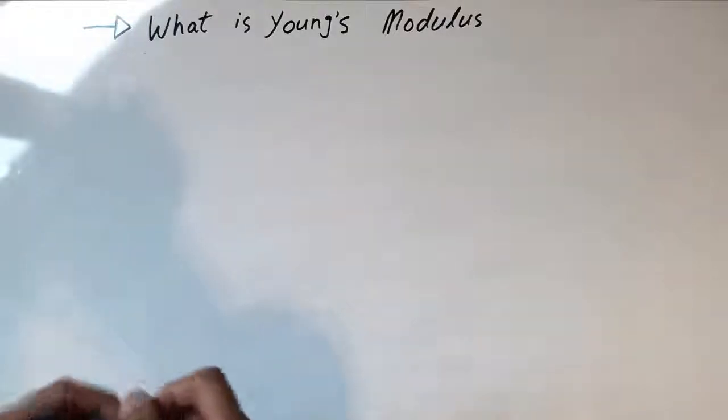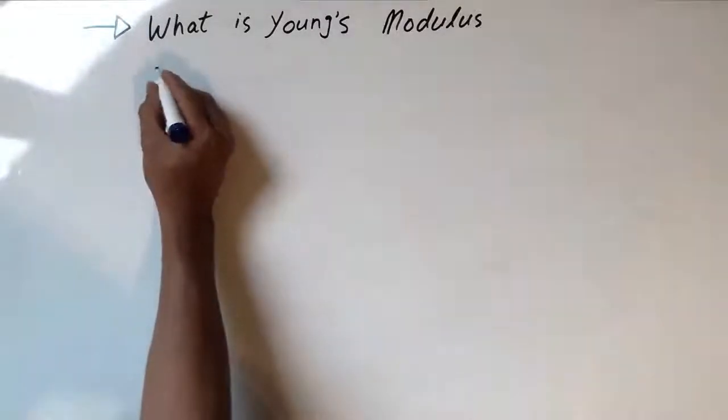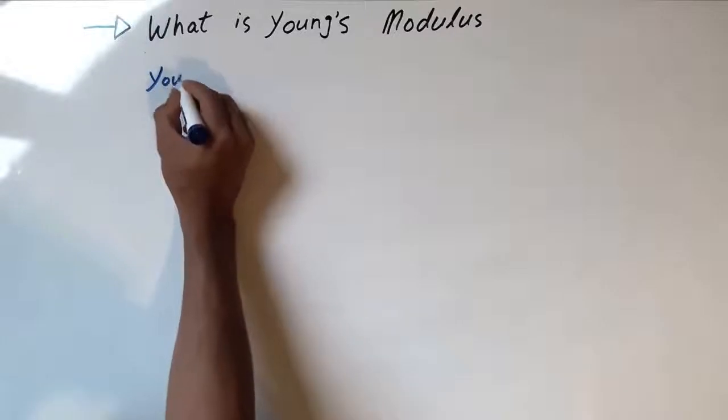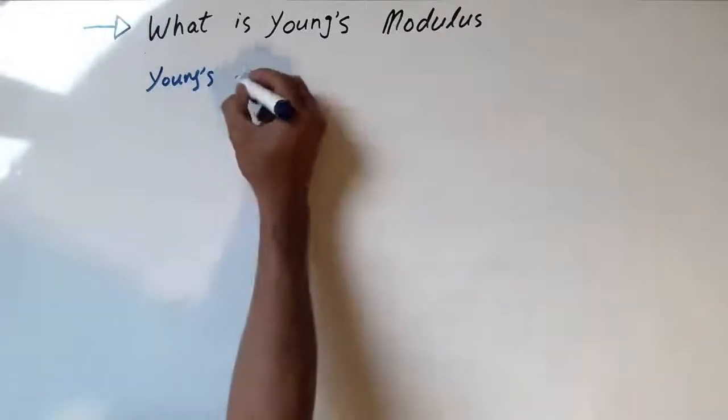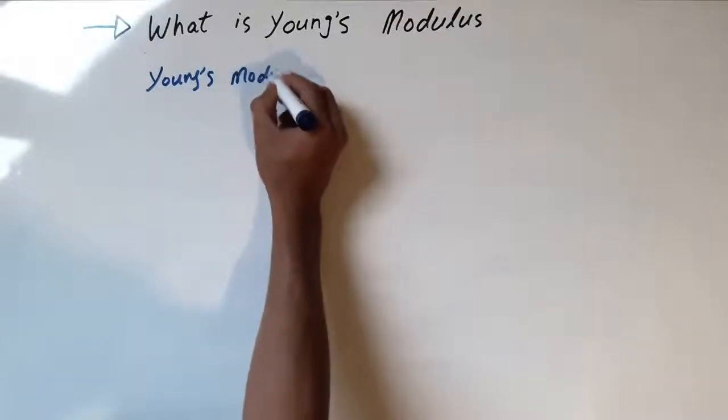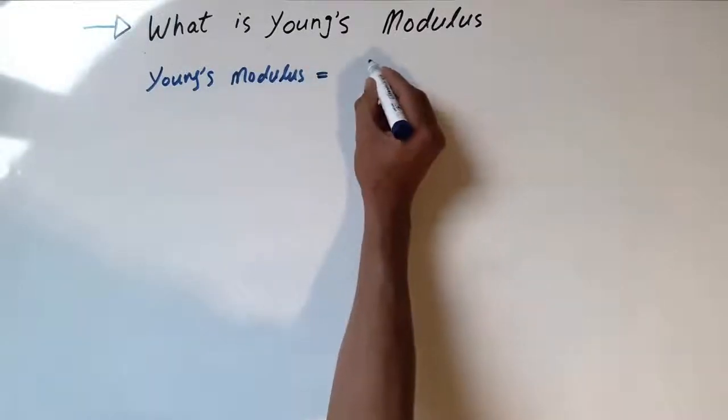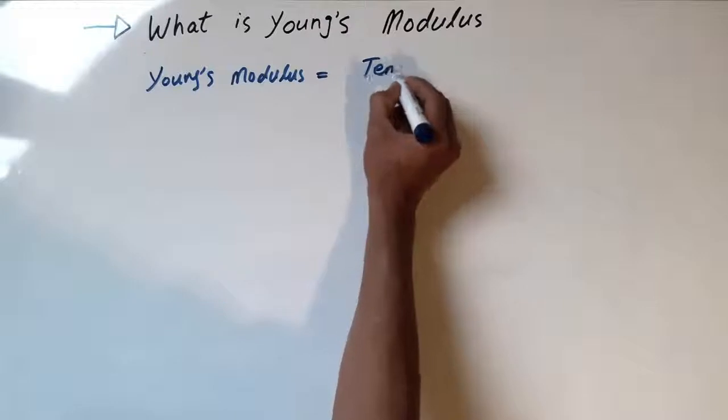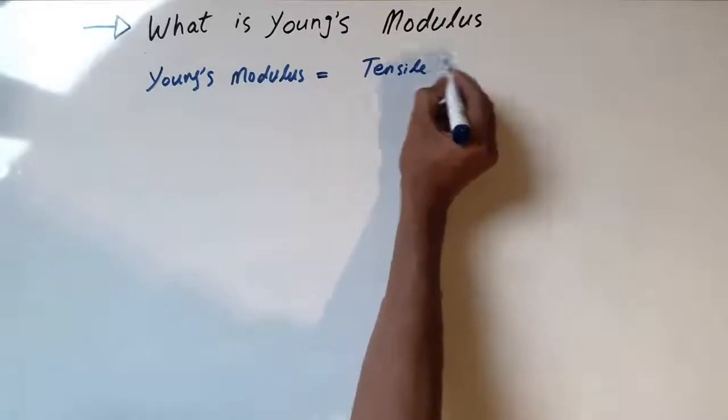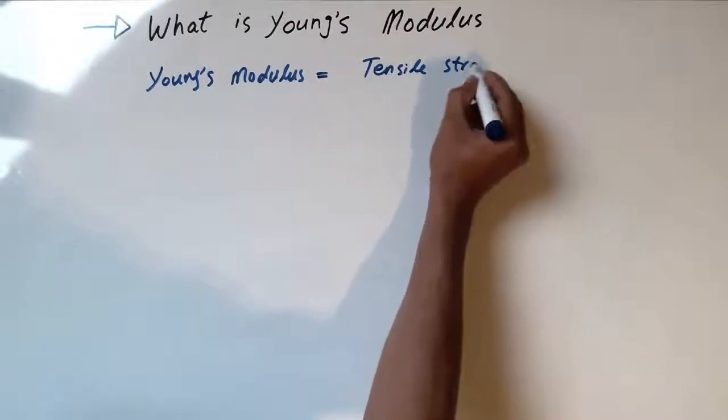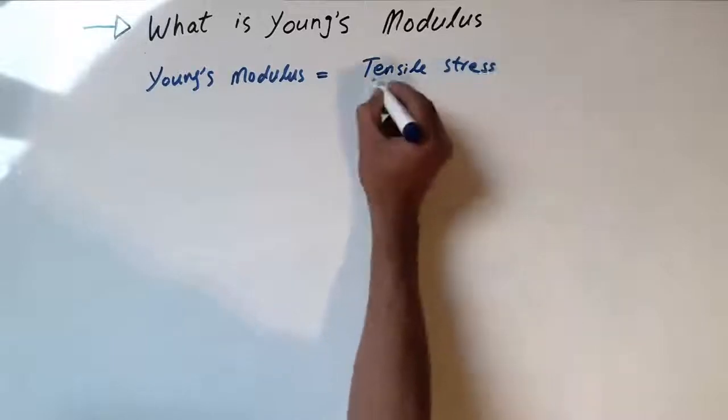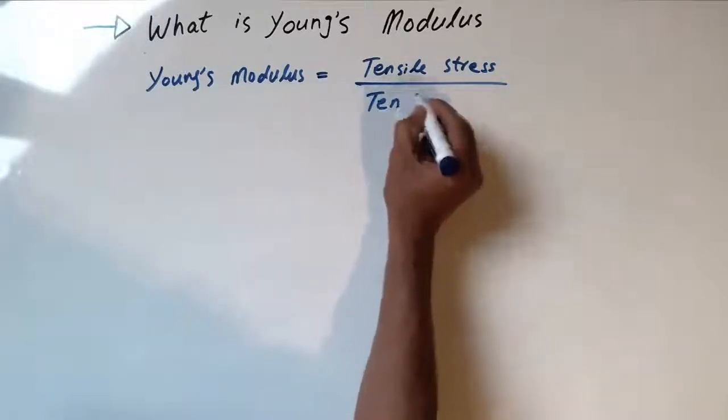What is the formula of Young's Modulus? Young's Modulus is equal to tensile stress over tensile strain.